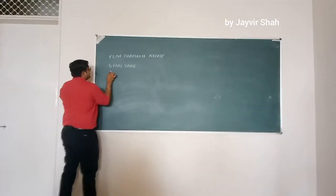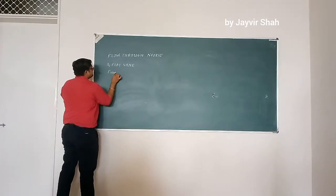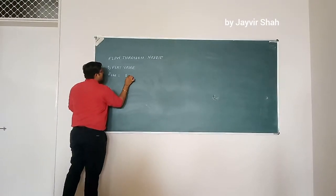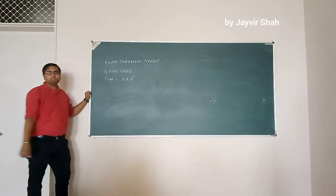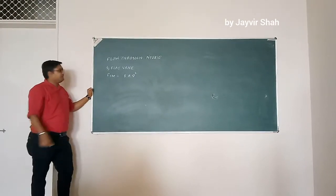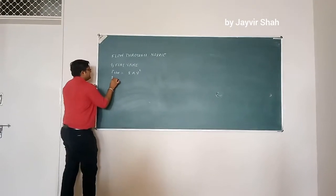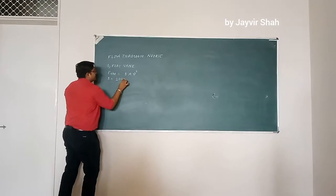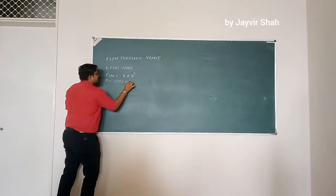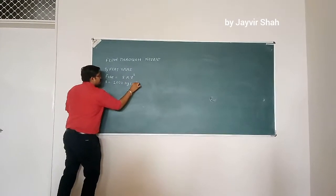F theoretical is given by ρAv². Where ρ is the density of water, which has a value of 1000 kg per meter cube.